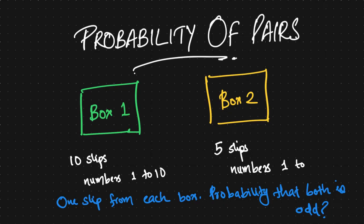We have some problems with shirts and pants as well. The sample space is very small, and if you want to calculate the numbers in the same way, we will calculate the numbers in the same way.